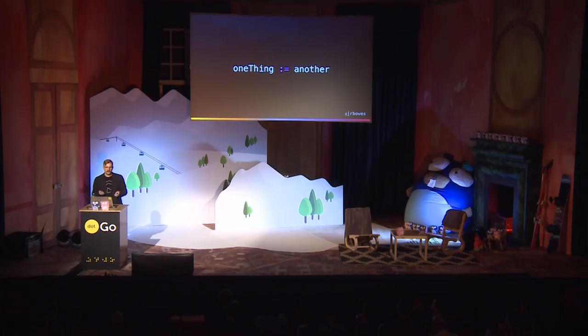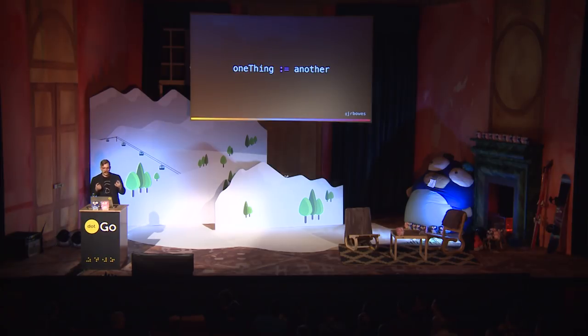TypeOf is just a shortcut to get the type off the value — you could do ValueOf.Type() and it would be the same thing. The cool thing is that if you can assign something to a variable, it has a value and a type. Maps, slices, arrays, channels, funcs — they all have types, so you can inspect and manipulate them with reflect.